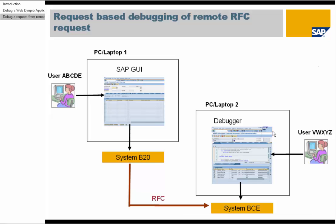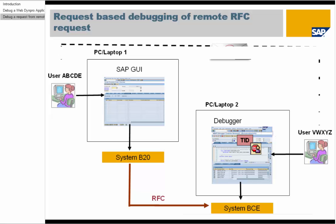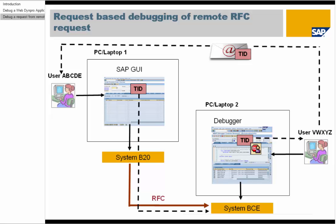With request-based debugging, the local user VWXYZ will activate the Terminal ID and set an external user breakpoint. Then they inform the remote user ABCD about the Terminal ID, sending it for example by email. The remote user ABCD activates their SAP GUI window for this Terminal ID and starts the request. The Terminal ID is sent along with the RFC request, and since it matches the Terminal ID of user VWXYZ's machine, the debugger will start and stop at the user breakpoint.